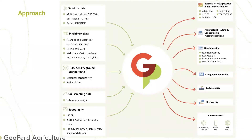In detail, our platform aggregates satellite data from various sources. For imagery, we aggregate from Landsat, Sentinel, and Planet. We also work with radar data, which allows us to look through the clouds. With machinery data, we work with as-applied and as-planted datasets, yield data, and additional sensors like grain moisture sensors or protein sensors. You can analyze and have all this data in one place in Geopard.